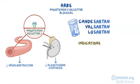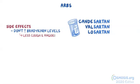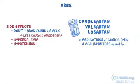ARBs have the same indications as ACE inhibitors and can also be used to treat hypertension, heart failure, and MIs. Unlike ACE inhibitors, they don't increase bradykinin levels in the blood, hence they cause less cough and angioedema. The adverse effects of angiotensin II receptor antagonists, just like ACE inhibitors, are hyperkalemia and hypotension. Despite having an apparently safer profile than ACE inhibitors, angiotensin II receptor antagonists are the medication of choice only if ACE inhibitors cannot be tolerated. Candesartan and losartan have a relatively long half-life and can be taken once or twice a day, while valsartan is given once daily.